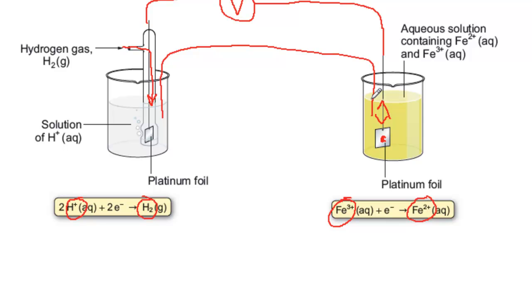And this particular cell could be used to measure the standard electrode potential of the Fe3+/Fe2+ half cell, because the standard hydrogen half cell has been chosen as the reference point for measuring the potential of all other half cells. There's more about this on page 736.